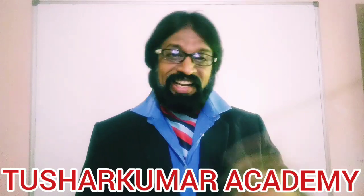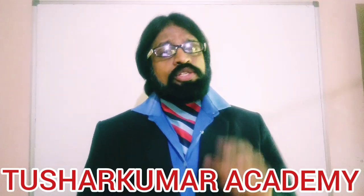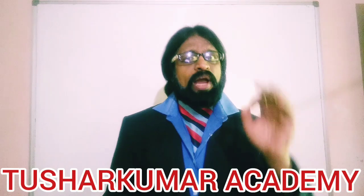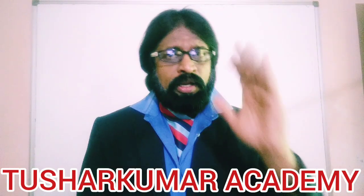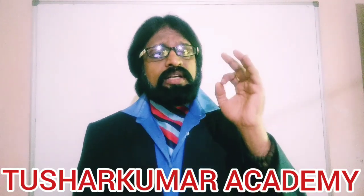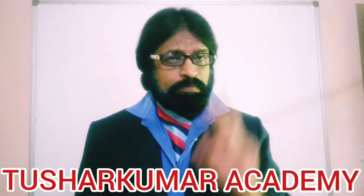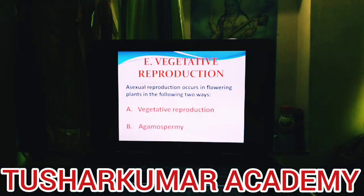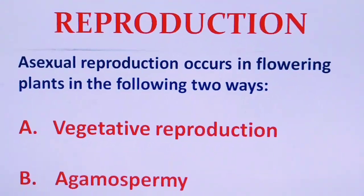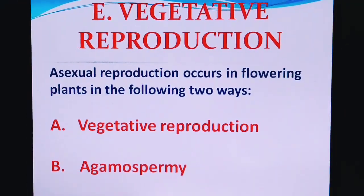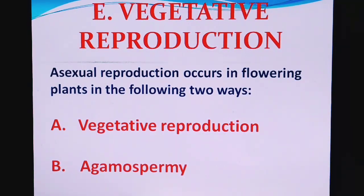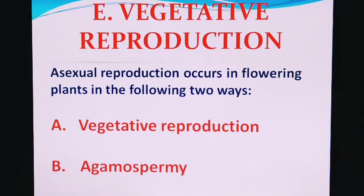Last time I told you that in the next lecture we are going to talk about vegetative reproduction. So today I'm going to talk about vegetative reproduction in plants. Before we proceed further, it is a type of asexual reproduction. Asexual reproduction occurring in flowering plants is practically of two types: vegetative reproduction and agamospermy. These are the two types of asexual reproduction in flowering plants. Today we talk about vegetative reproduction first, and later about agamospermy, which is also known as apomixis.